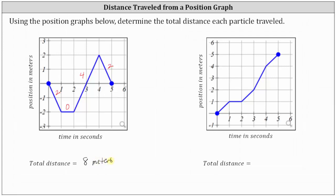Now let's take a look at particle two. For the first second, the particle travels from the starting position to a position of one meter in the positive direction, traveling one meter. From one second to two seconds, the position remains positive one, so the particle travels zero meters. From two seconds to three seconds, the particle travels from positive one meter to positive two meters — one meter traveled.